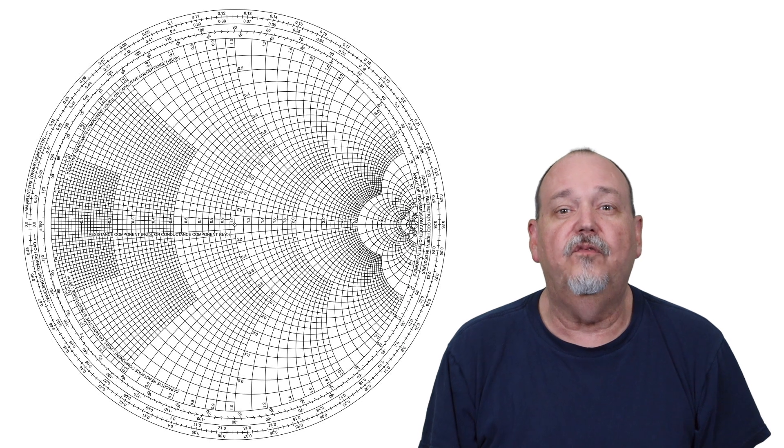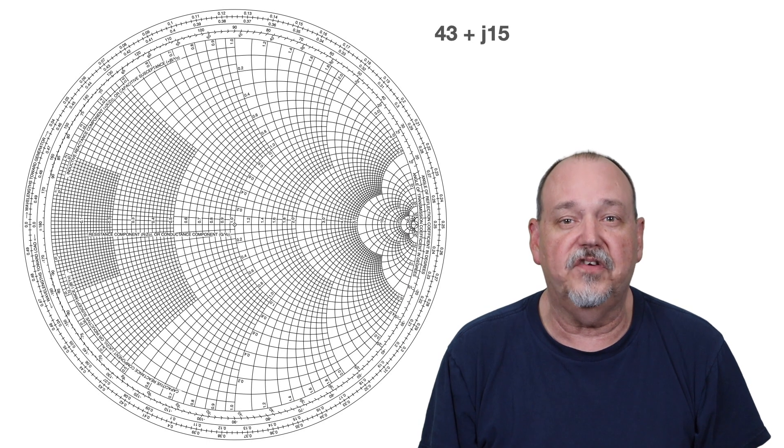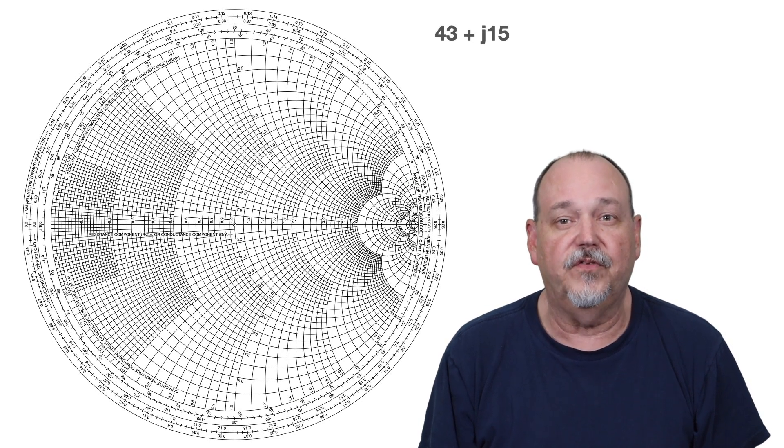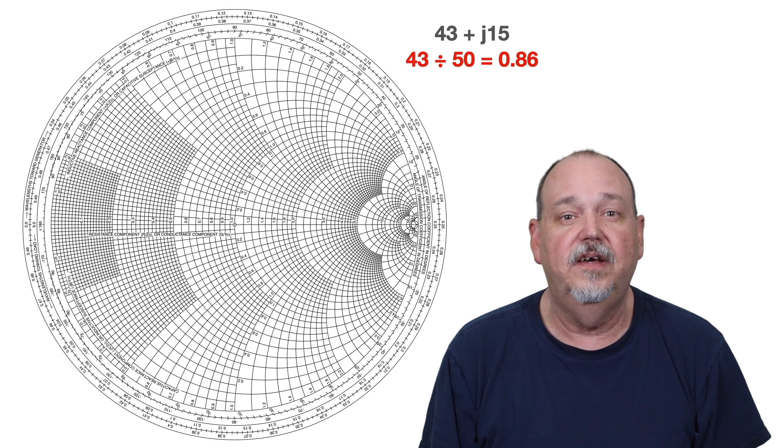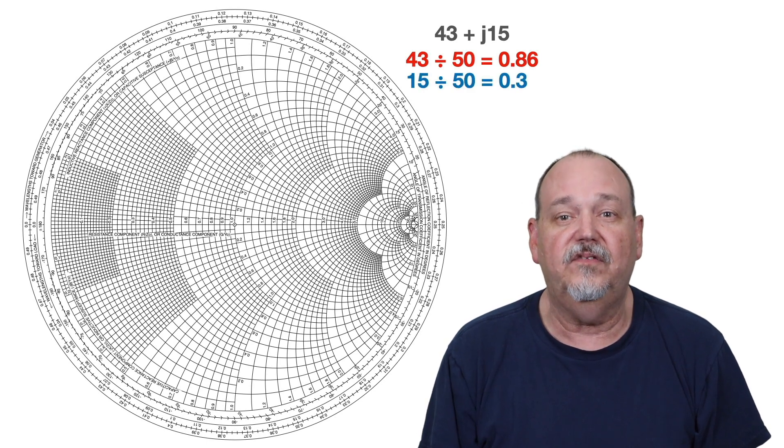Now, let's plot our example of 43 plus J15 on the Smith chart. First, we need to normalize these numbers so we can plot them. So, 43 divided by 50 is 0.86, and 15 divided by 50 is 0.3.